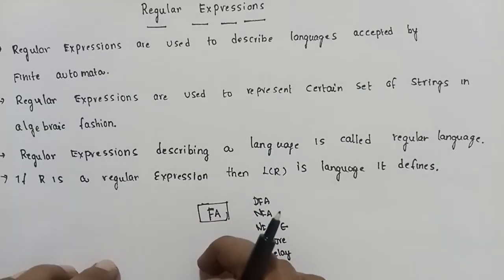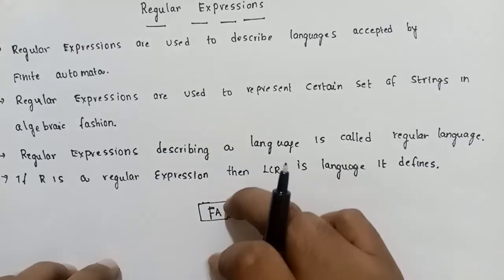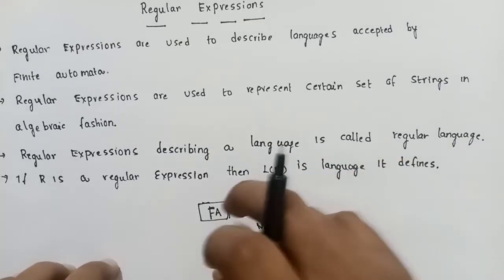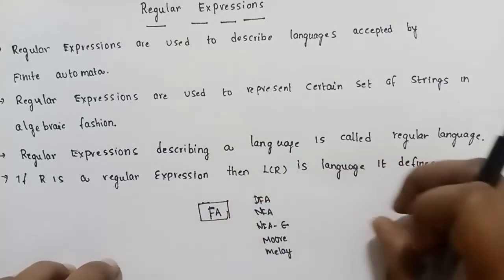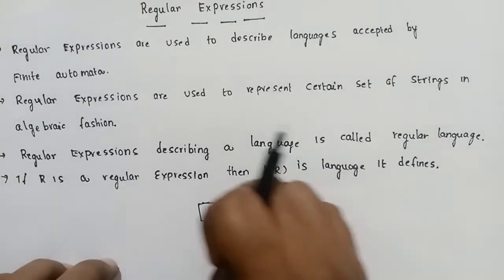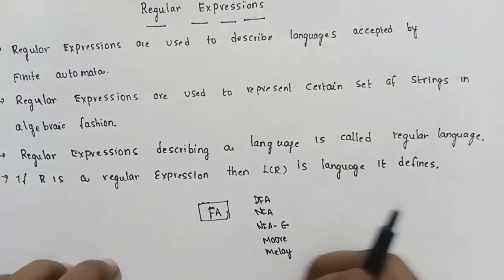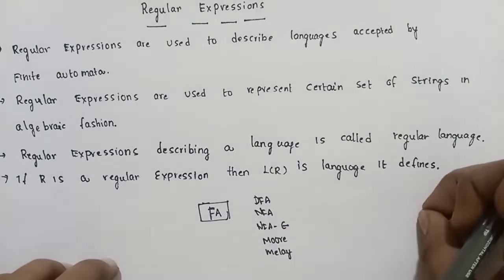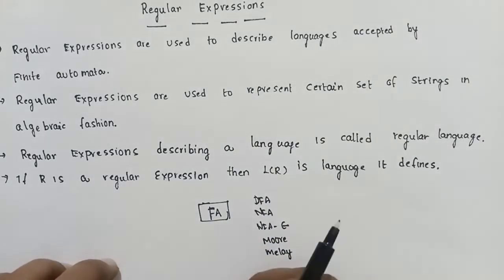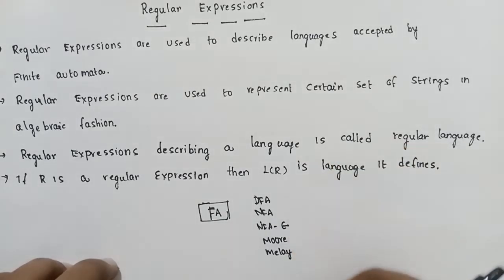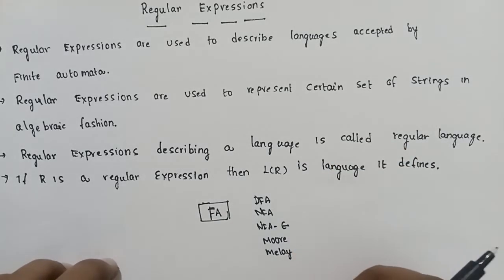The set of all strings which are accepted by the finite automata is called a language.